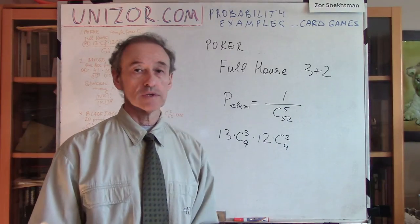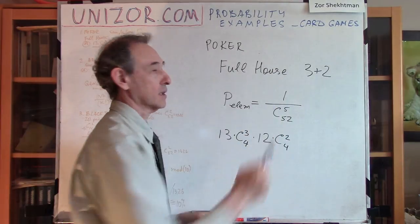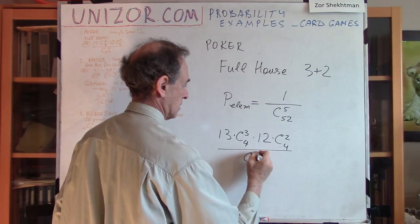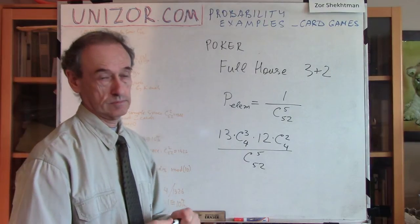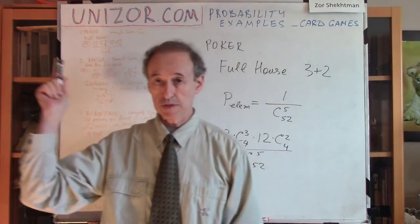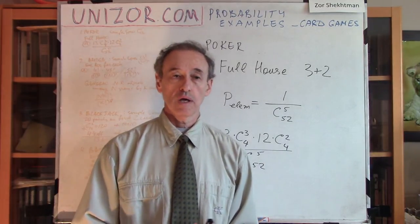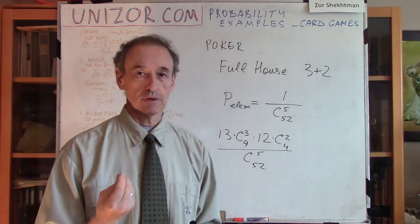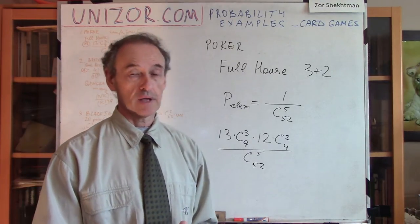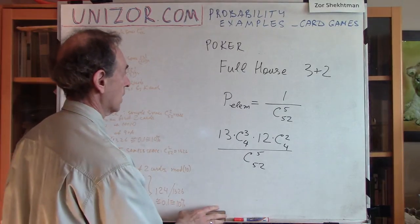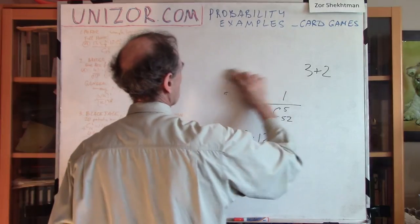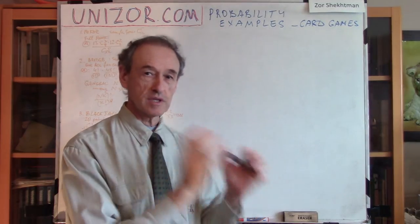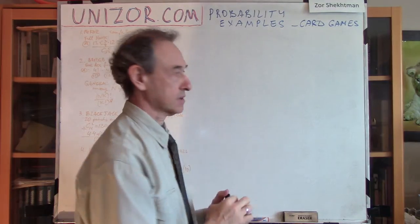So if I know the number of these elementary events and I know the probability of each one, then the probability of my event is their product. If you go to the notes for this particular lecture on unizor.com, I even put the concrete number with decimal places, which gives you a better feel of how often or rarely the combination Full House actually occurs. That's all for the first game of poker — I'm just choosing poker as an example of one particular aspect of the theory of probability.